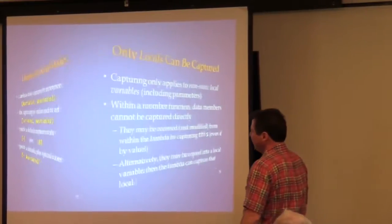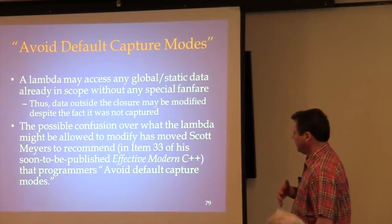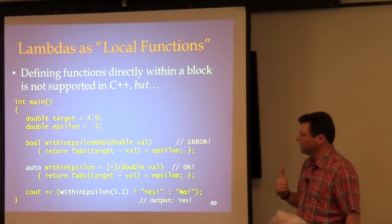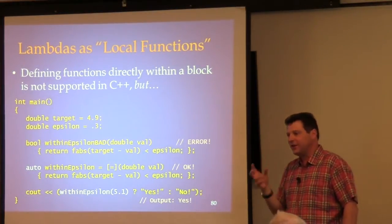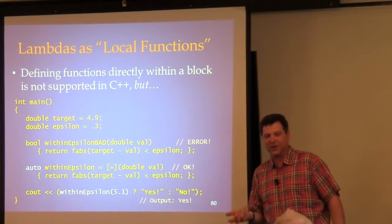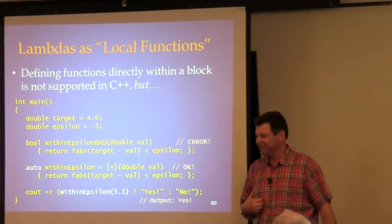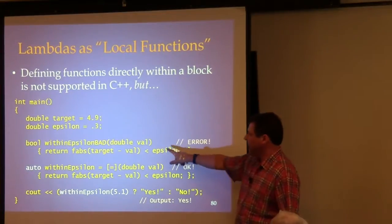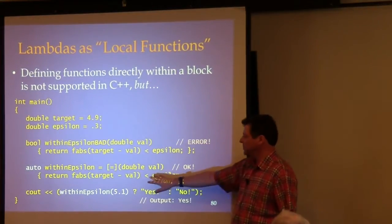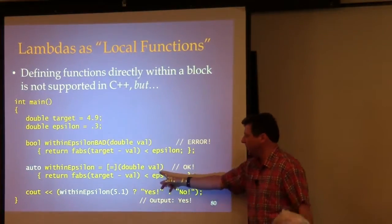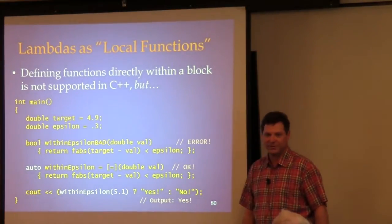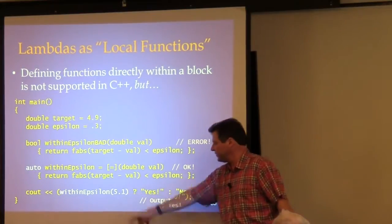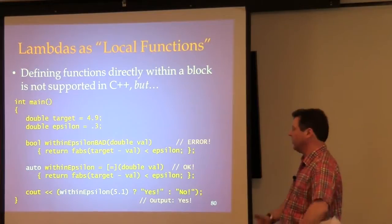Avoid default capture modes — that's item 33 in Scott's Effective Modern C++. Don't use '=' or '&' as a blanket default. Always list out each thing you're capturing — it makes it really clear. Even then it can be confusing with file-scope statics. In C and C++, it's illegal to have a local function within a function. But lambdas give you a way around this — you can declare an auto and initialize it with a lambda, then call it just as if it were an ordinary function.